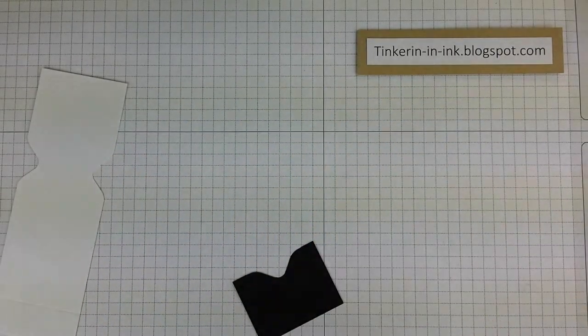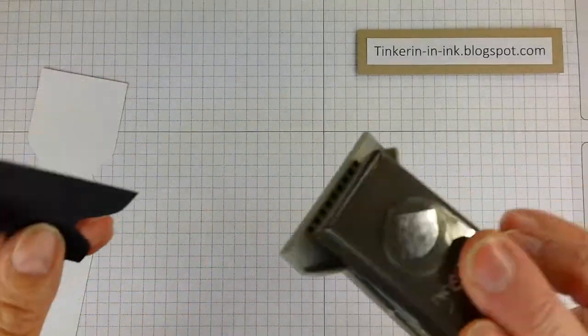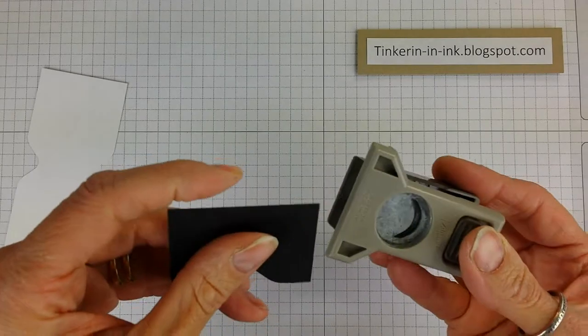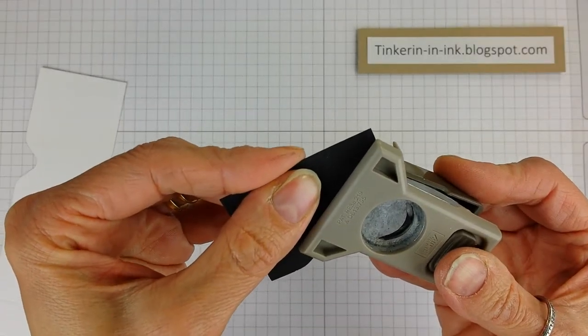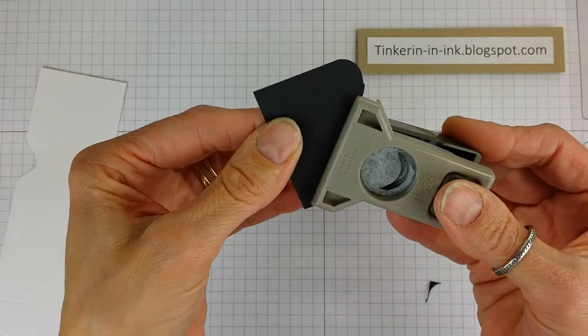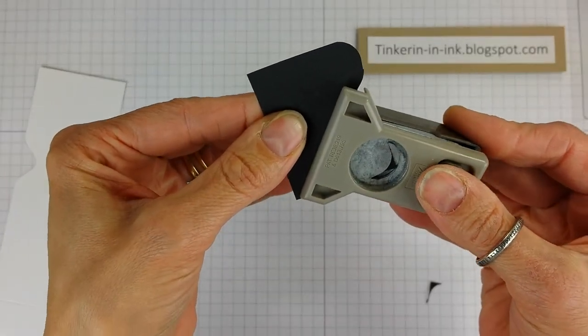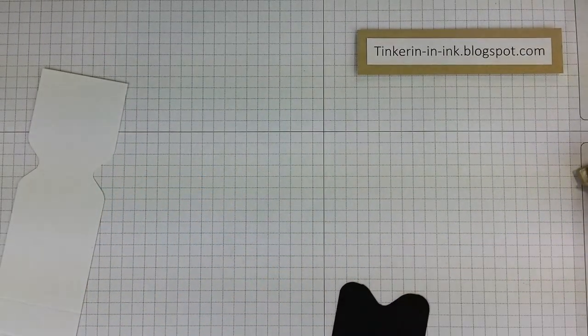You use whatever corner rounder you can find. I know that we used to carry this one and now it's retired, but that doesn't mean it went away. And I bet you have a corner rounder in your stash. I have the We Are Memory Keepers one too, but I did not pull that out right now.